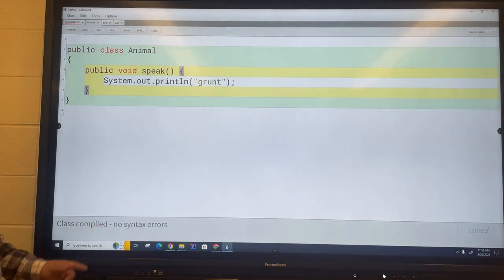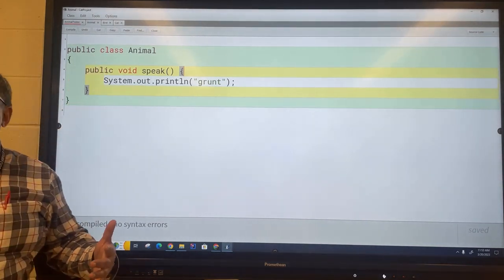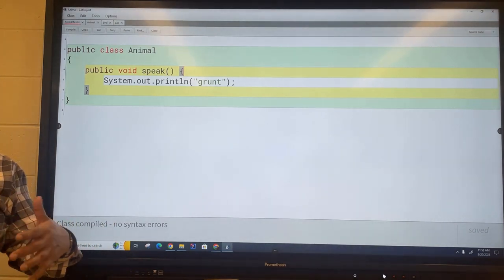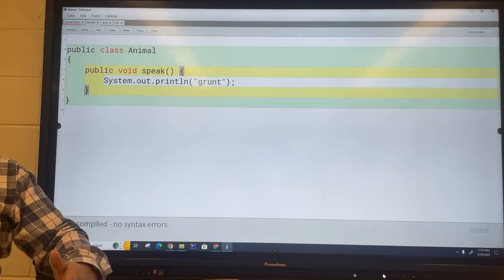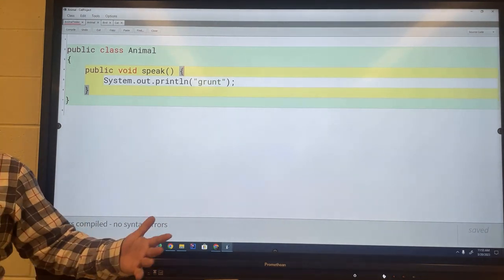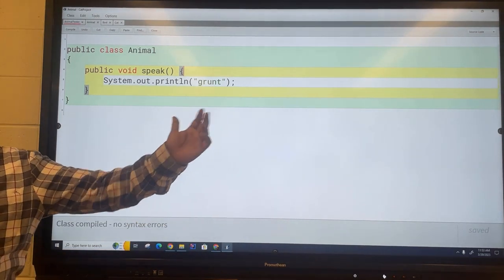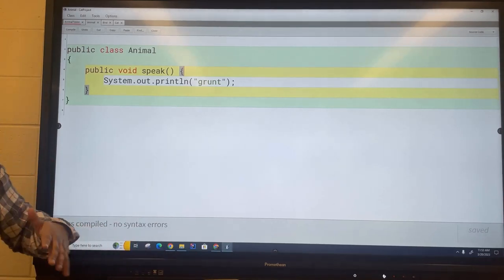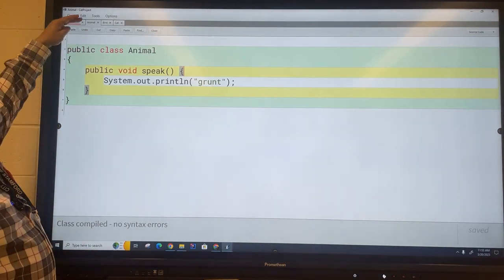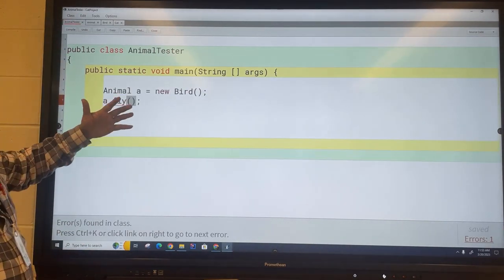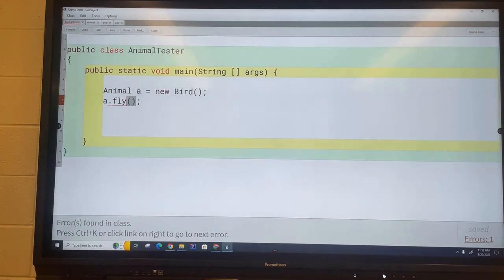At runtime when it ran and I told it to speak instead of going to the animal speak it said wait a minute, is there a special speak method that I should call because I'm some special kind of animal. And at runtime it realized that it was a bird, says oh hey I got my own speak method let me call that one. So it calls that one so now when it calls that one and it's time to speak it says chirp.